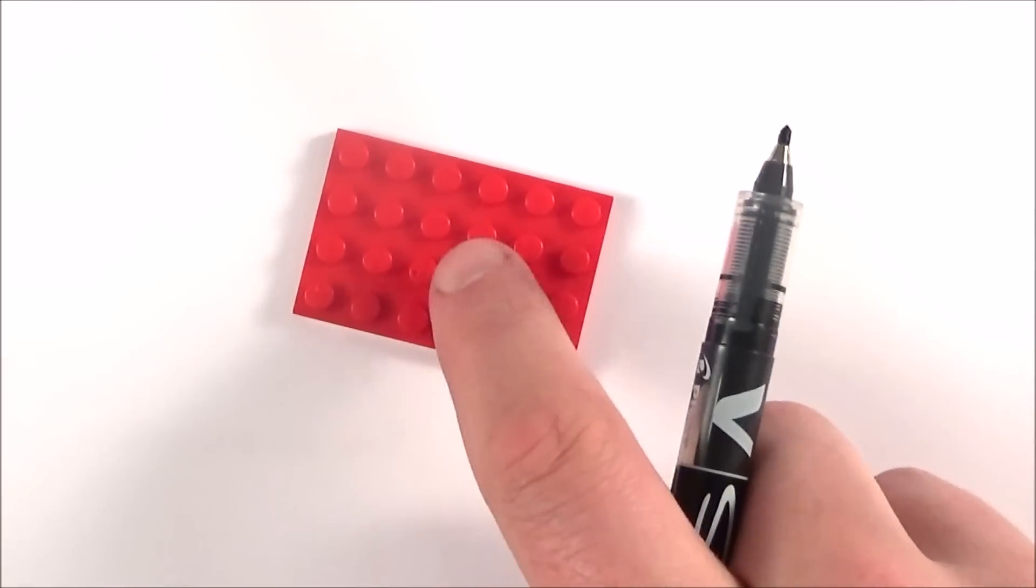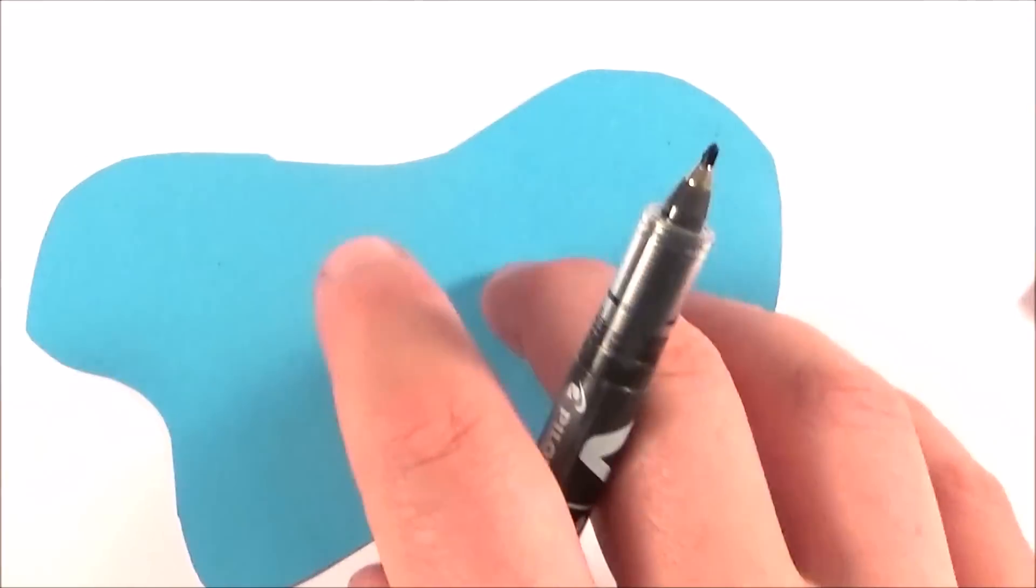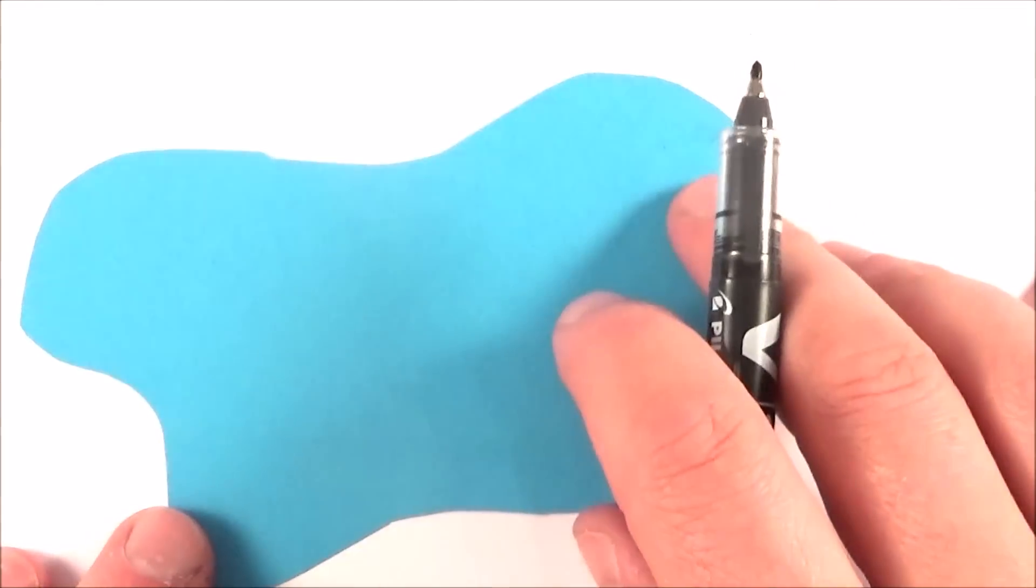But what happens if we don't have this nice regular shape? Perhaps we've got something which is a bit more irregular. What do we do then? Well we can find the centre of mass at the point at which the weight or the mass appears to act by hanging this up.